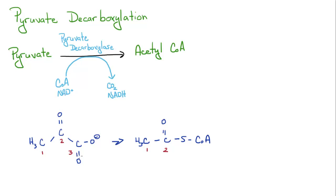Pyruvate decarboxylase is going to chop off this carbon dioxide group right here. It's going to attach the coenzyme A to the acetyl group that's formed, and in the process is going to reduce NAD to NADH.